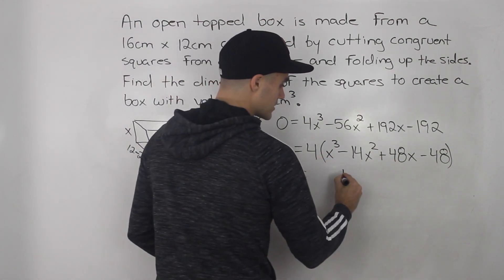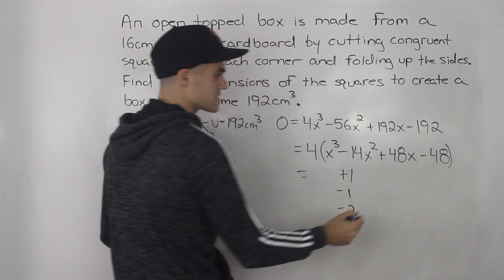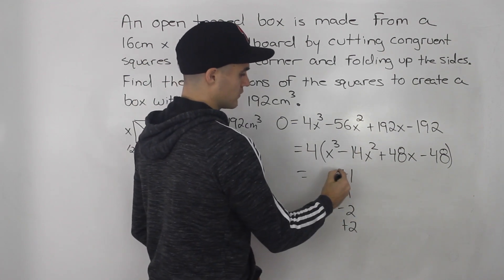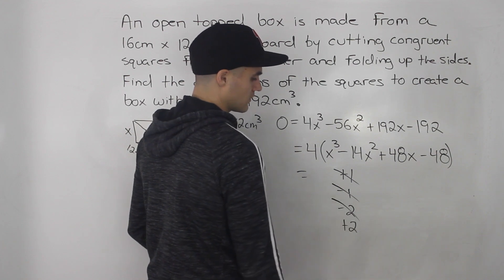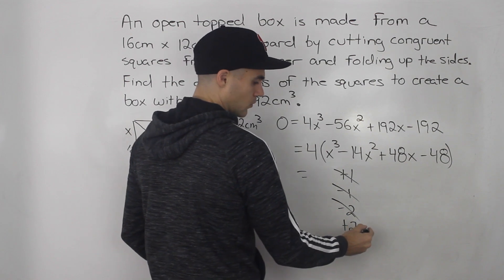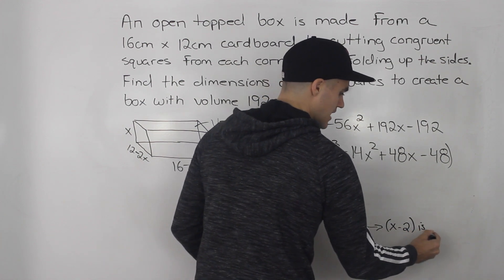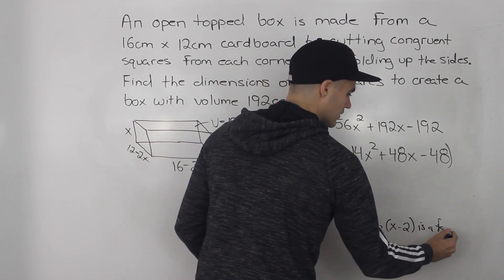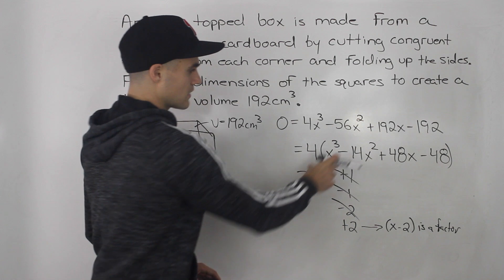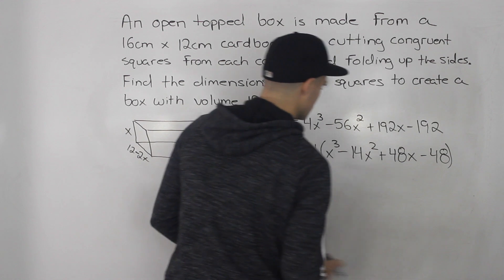Using the factor theorem, we plug in plus 1, minus 1, minus 2, plus 2, etc., until we get a value of 0. Plugging in plus 1 won't give 0, negative 1 won't, negative 2 won't — but plus 2, when substituted for all the x values, gives 0. So by the factor theorem, x minus 2 is a factor of the cubic.